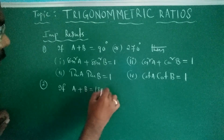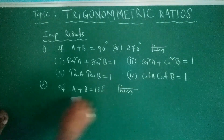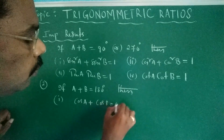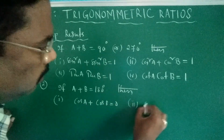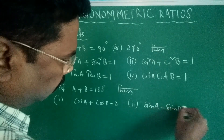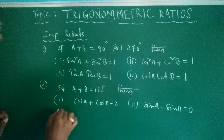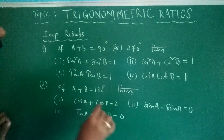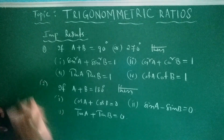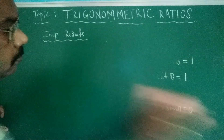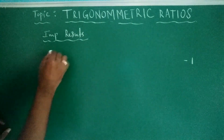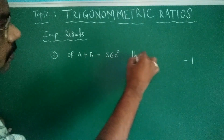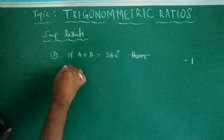Next, if a plus b is equal to 180 degrees, then: (1) cos a + cos b = 0, (2) sin a − sin b = 0, (3) tan a + tan b = 0. Next, if a plus b is equal to 360 degrees, then: